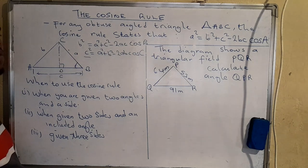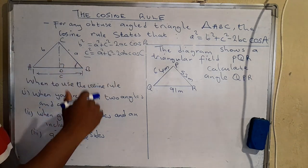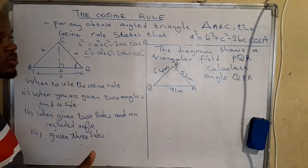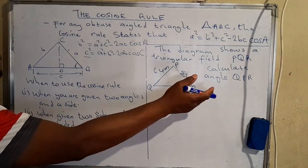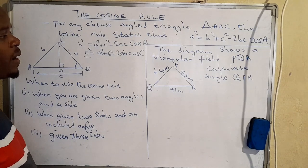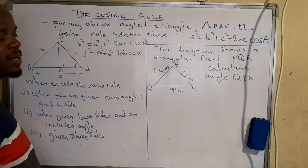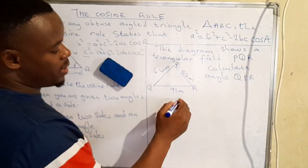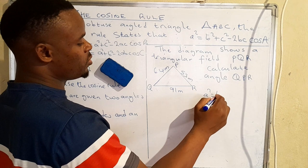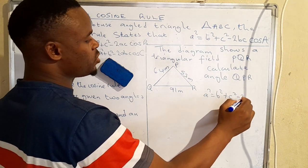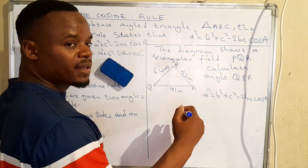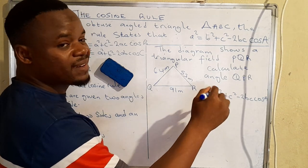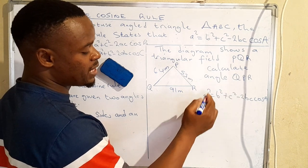Now since you know how to formulate that equation, let's see the alternative form in which you can write it. We mostly use the original form when we want to determine the unknown side. But what if they want you to find an angle? We can actually manipulate that equation. Starting with a squared equals b squared plus c squared minus 2bc cos A, I'm going to move these terms to the other side using additive inverses.